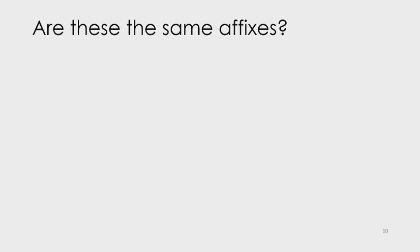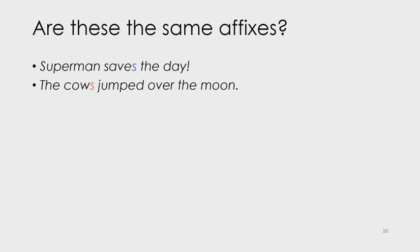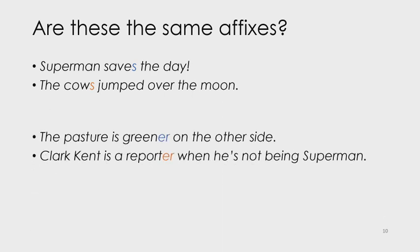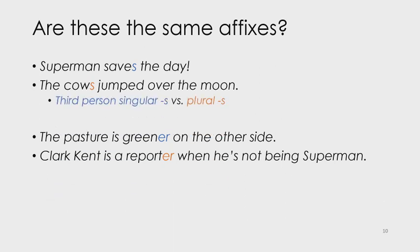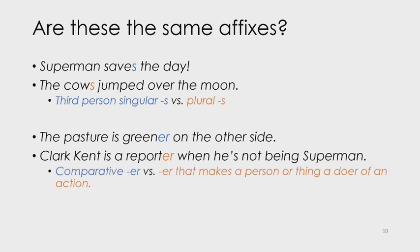Having talked about several affixes and seen some appear multiple times, are these the same affixes? Is the S in 'Superman saves the day again' the same S as in 'the cows jumped over the moon'? Is the -er in 'the grass is greener on the other side' the same -er as in 'Clark Kent is a reporter when he's not being Superman'? Well, not quite. The first S is the third person singular S, while the second is the plural S. When -er is attached to green it makes it a comparative, as in 'this shade of green is much greener than that shade.' While -er in reporter makes Clark Kent a person who reports for a living. These aren't quite the same affixes — each affix has its own unique meaning.